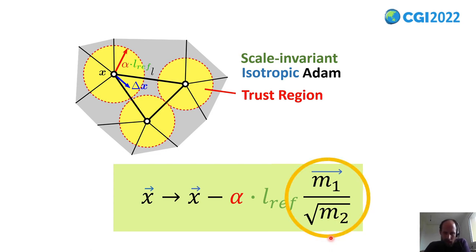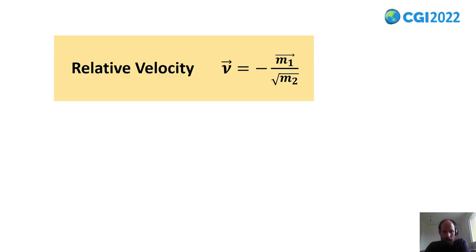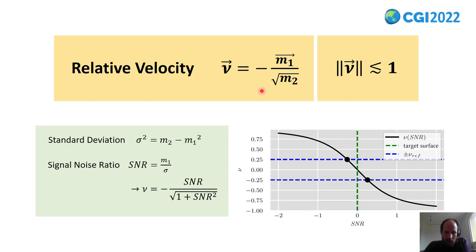Let's look at this fraction here. I didn't find any name for this fraction, so I call it relative velocity. This is an interesting property that the length of the relative velocity is usually smaller than one. That's not obvious from this equation, but we can transform the equation and write it as a function of a signal-to-noise ratio. And then you can see for very large signal-to-noise ratio, the length of nu goes to one.